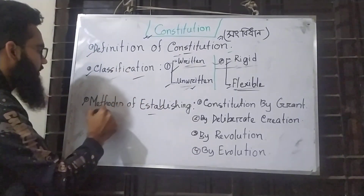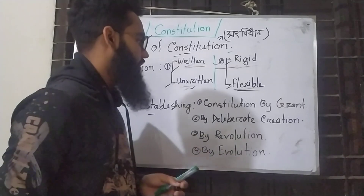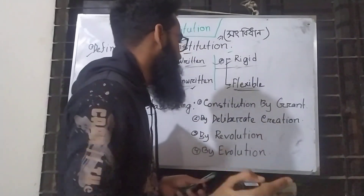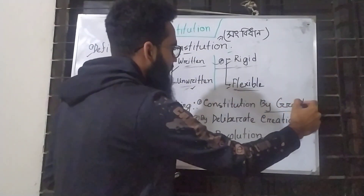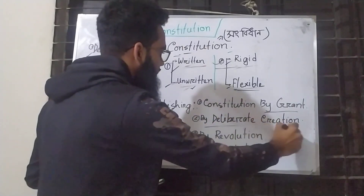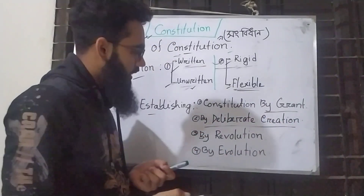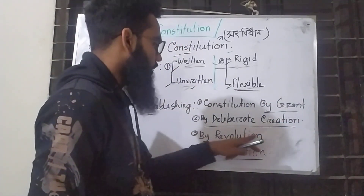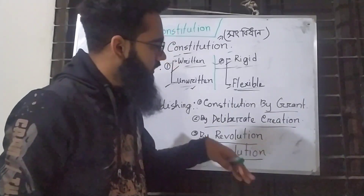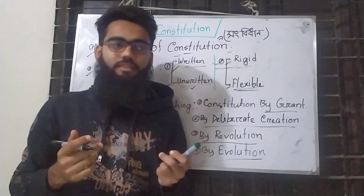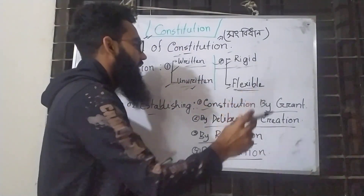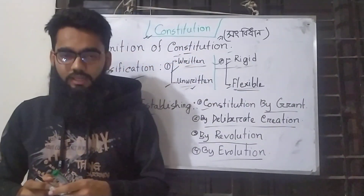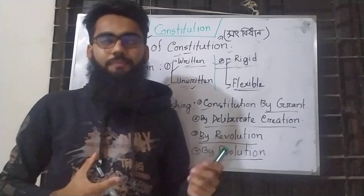Classifications also include the methods of establishing the constitution. A constitution can be established by grant, by delivery or convention, by evaluation or evolution, and by revolution. These are the four methods of establishing a constitution.